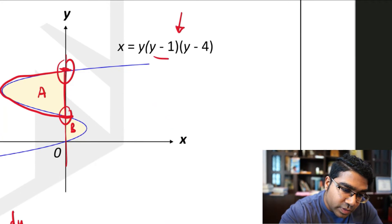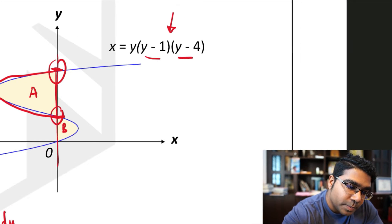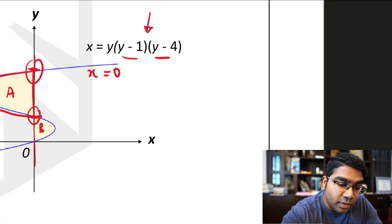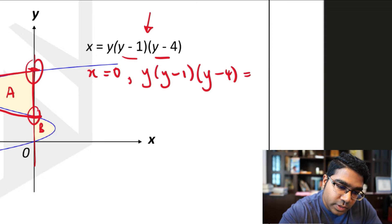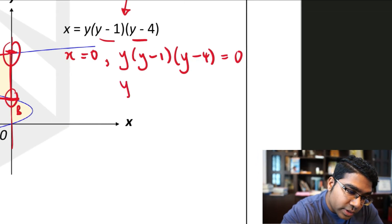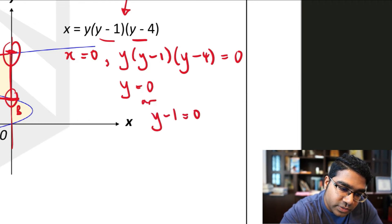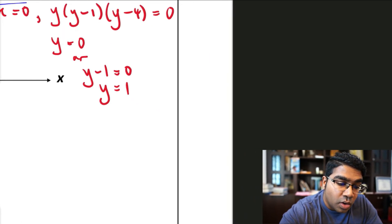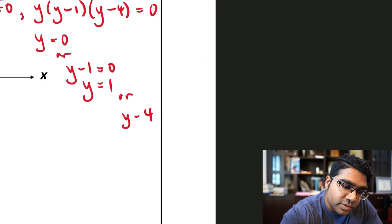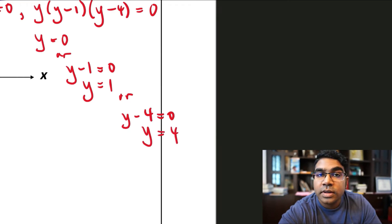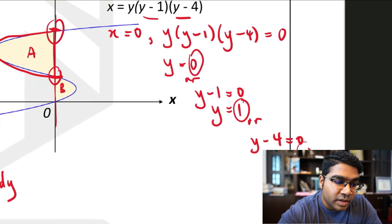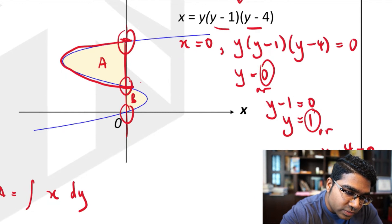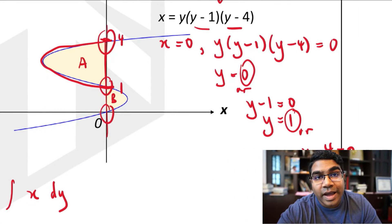To find the y-intercepts, we set x equal to 0. So y(y − 1)(y − 4) = 0, which gives y = 0, y = 1, or y = 4. So now we have all our y-intercepts: 0, 1, and 4. We can label them on the y-axis, and these give us our limits.